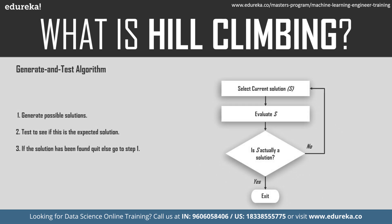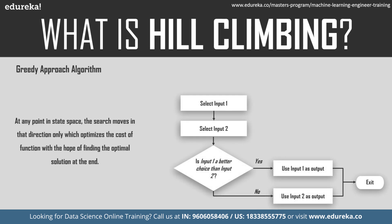Hill Climbing is a variant of the generate-and-test algorithm. It generates possible solutions, tests them to see if they meet the goal, and if found, quits the loop — otherwise it returns to select a new current solution. It takes feedback from the test procedure and uses it to decide the next move in the search space. It also uses a greedy approach: at any point in the state space, the search moves only in the direction that optimizes the cost function, hoping to find an optimal solution.